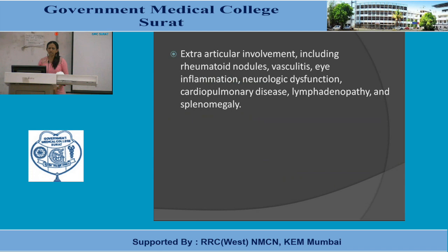Extra-articular involvement includes rheumatoid nodules, vasculitis, eye inflammation, neurological dysfunction, cardiopulmonary disease, lymphadenopathy, and splenomegaly. Although RA is commonly assumed to be only a joint disease, it also significantly involves extra-articular portions of the body.